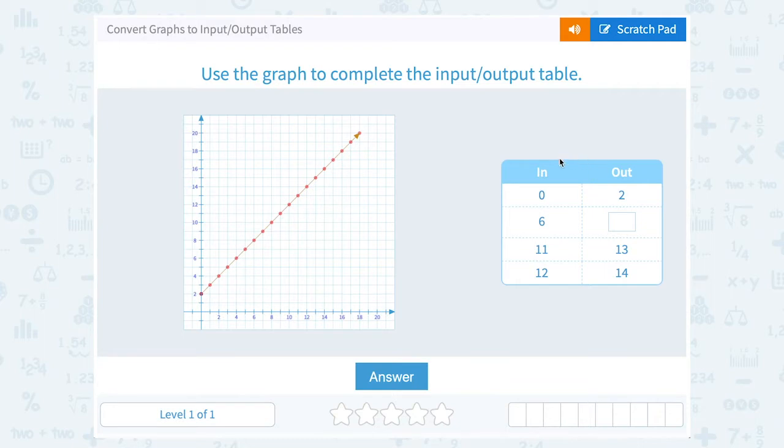Okay, so notice we have an in column with 0, 6, 11, and 12, and an out column with 2, we don't know, 13, and 14.